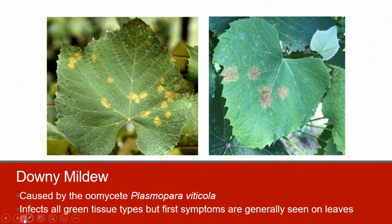Downy mildew, caused by the Oomycete Plasmopara viticola, affects both leaves and fruit and is especially serious in climates with abundant rainfall and high relative humidity.